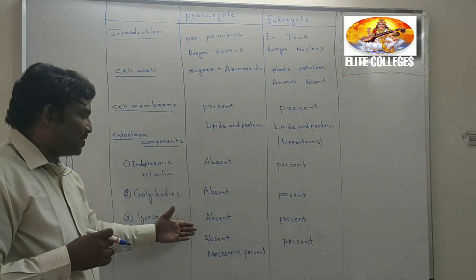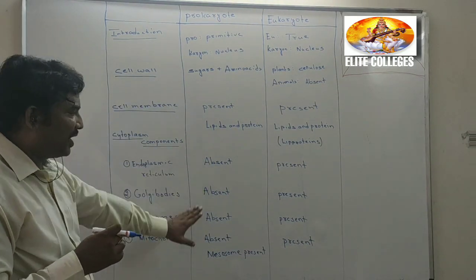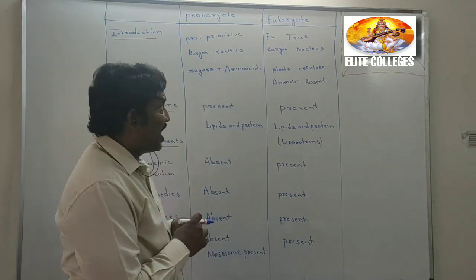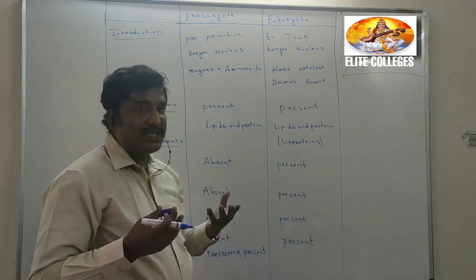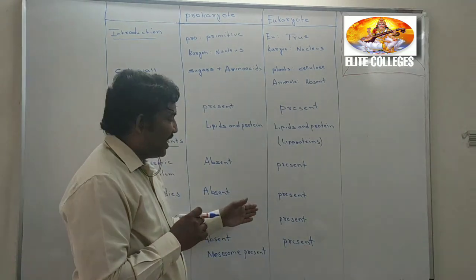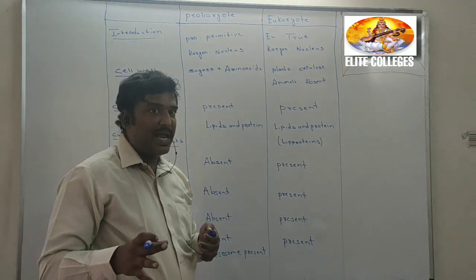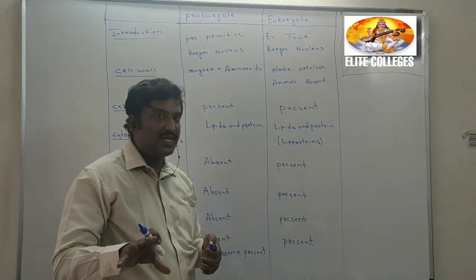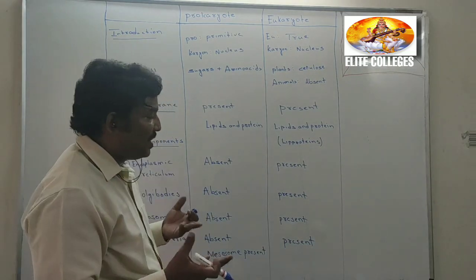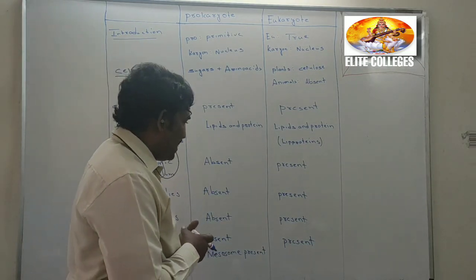Lysosomes are totally absent in prokaryotes but present in eukaryotes. Specifically, lysosomes are present in animal cells. In the case of plants, lysosomes are absent; instead, other organelles are present.